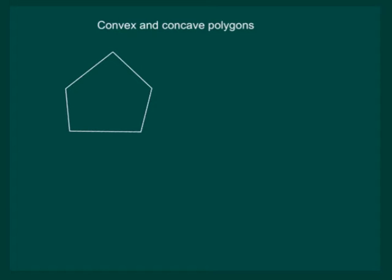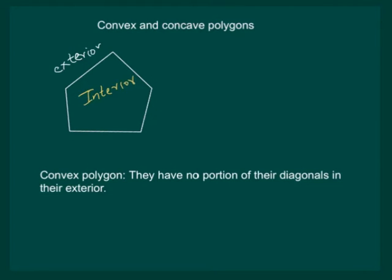While the area covered outside these boundaries is called the exterior. Now we are in a position to define convex polygon.